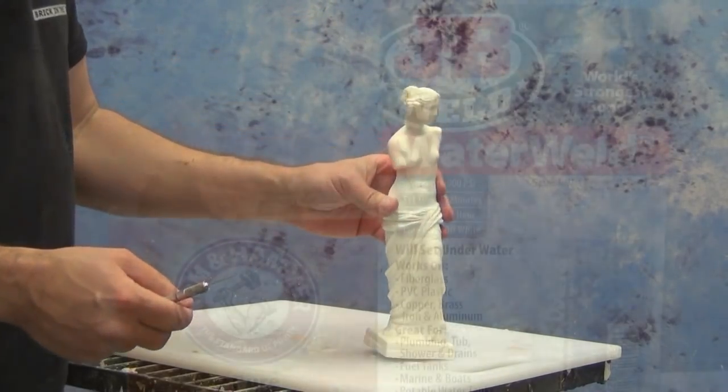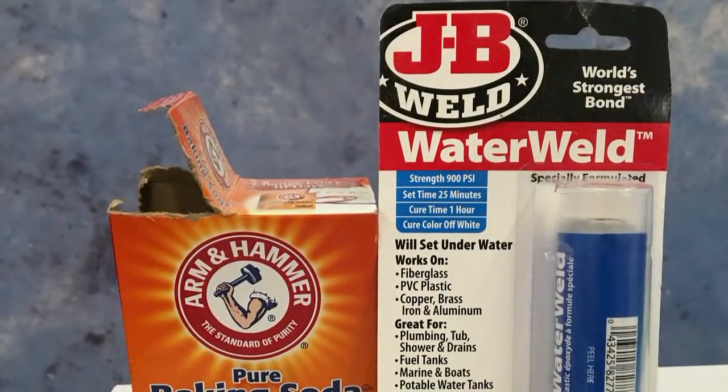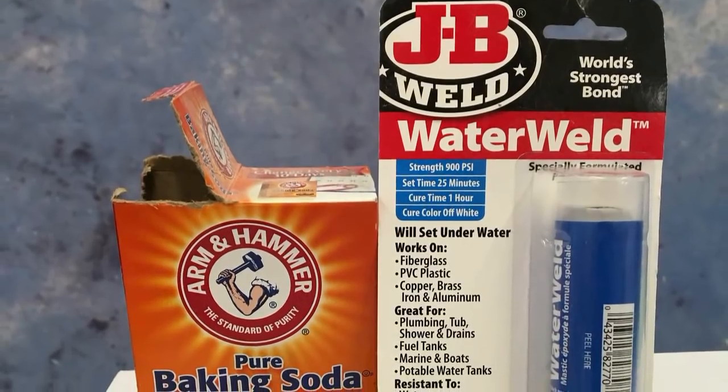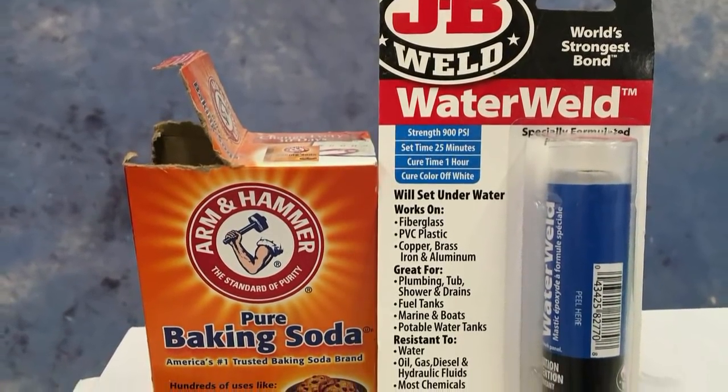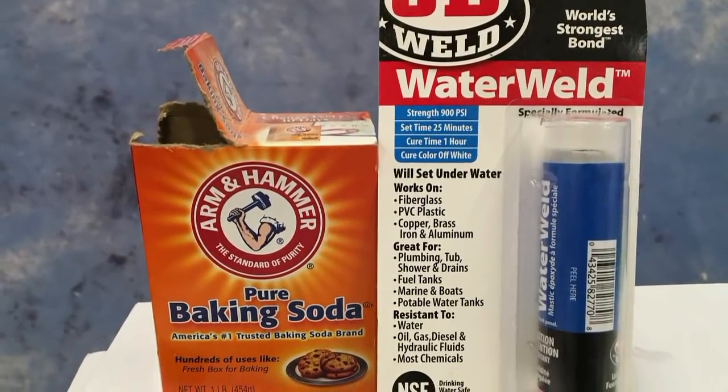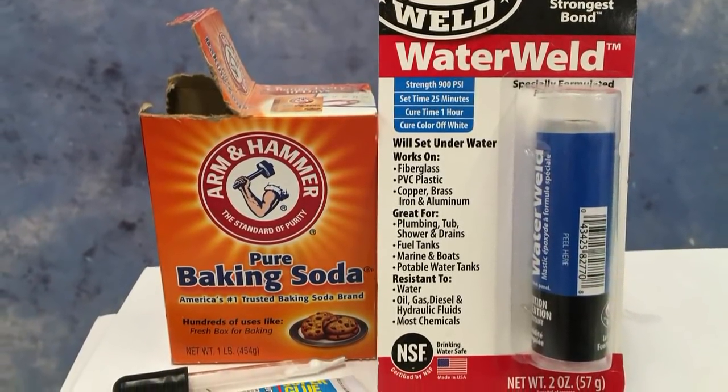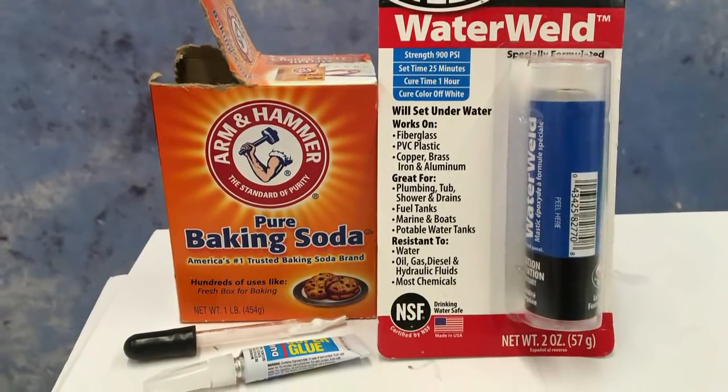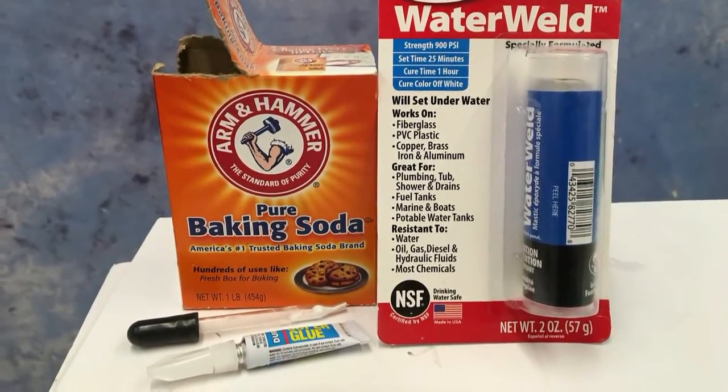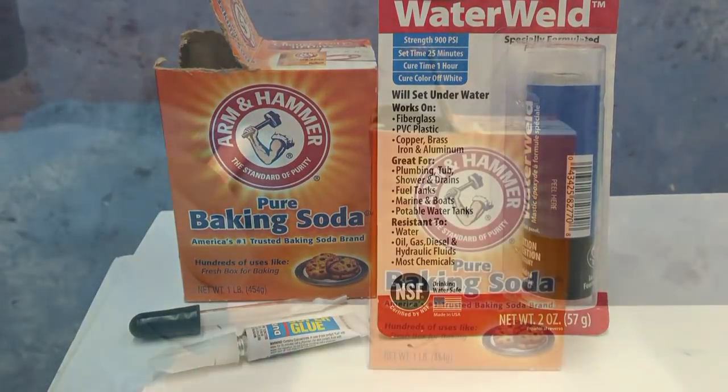The two methods we'll be showing for patching air bubbles and filling voids are using baking soda and super glue, and water weld putty. The baking soda and super glue method is typically for smaller air bubbles, whereas the water weld putty is better for filling larger voids or even re-sculpting areas that didn't come out quite right on a finished cast part.